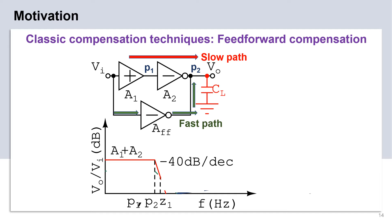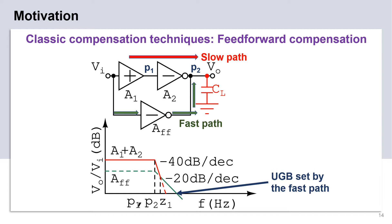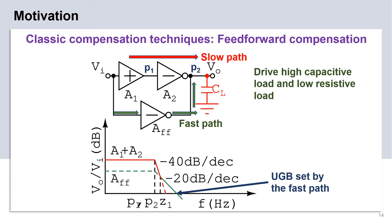The signals from both paths are added in the current domain. For low-frequency signals, the gain of the slow path is very high and hence it dominates, whereas for high-frequency signals, the fast path response dominates. The fast path sets the UGB with a minus 20 dB per decade roll-off. This compensation technique separates the low-frequency operation from the high-frequency operation. Thus, it has the potential to provide high gain and UGB while being able to drive large-capacitive and low-resistive loads. As these are our requirements from the amplifier for the mixer-first receivers, we will be using the feed-forward compensation technique for our purpose.